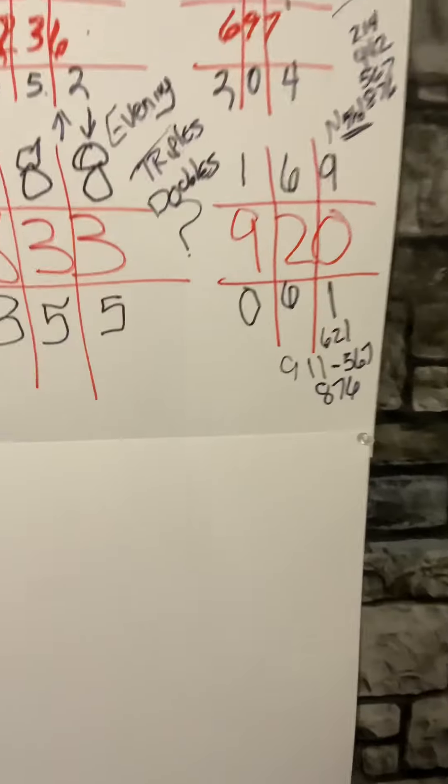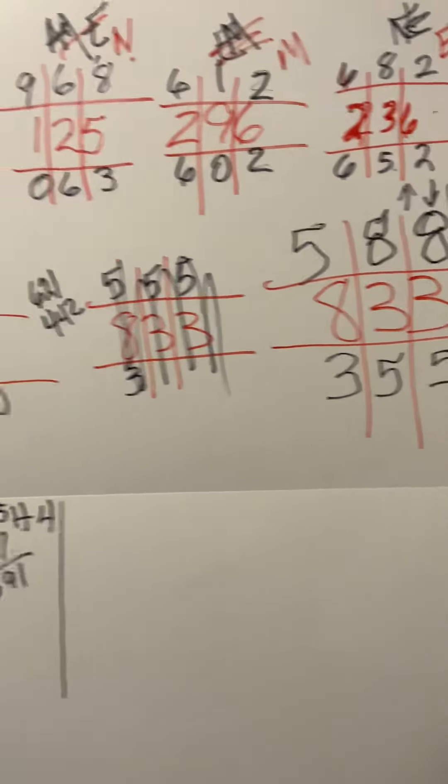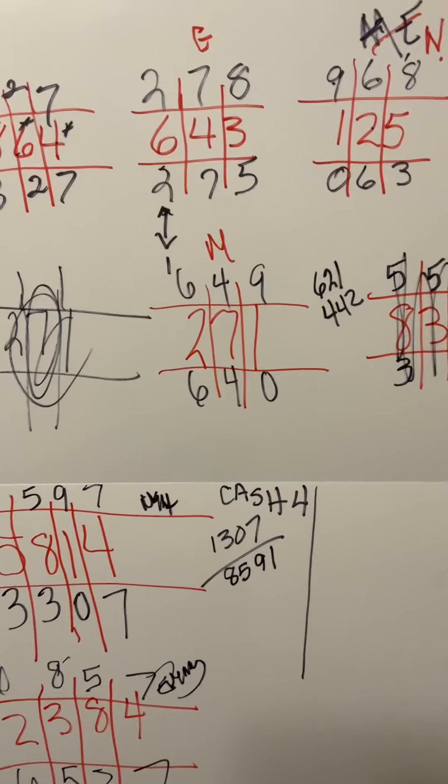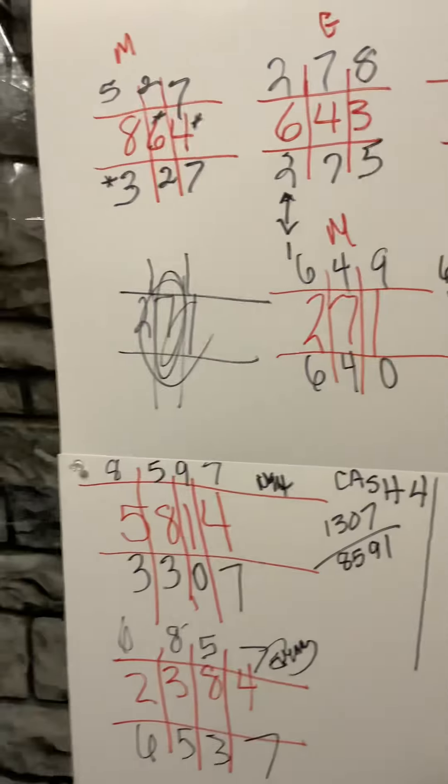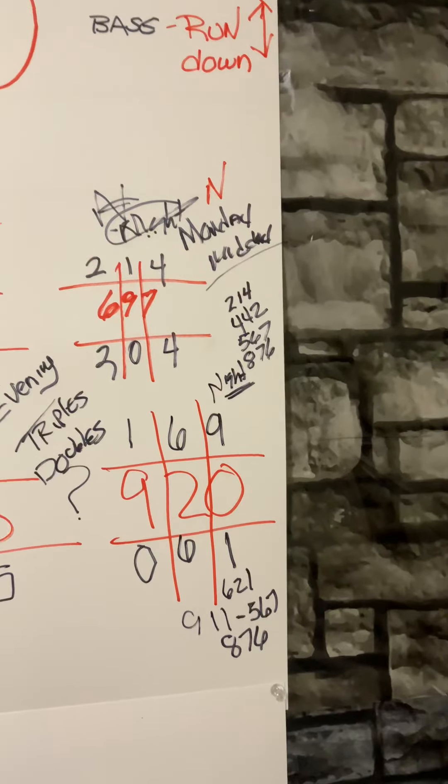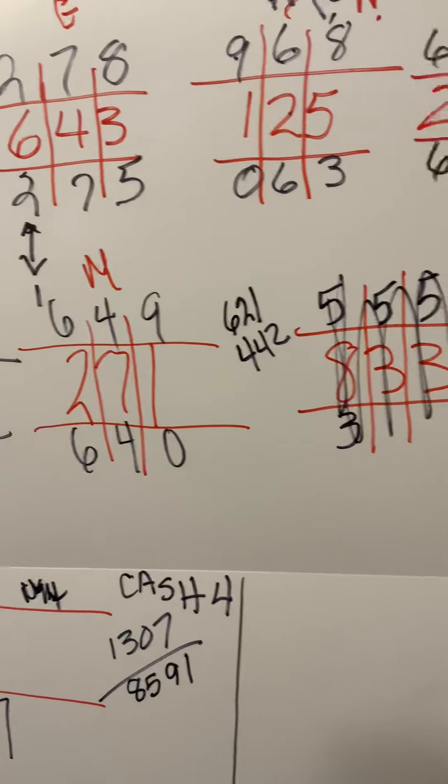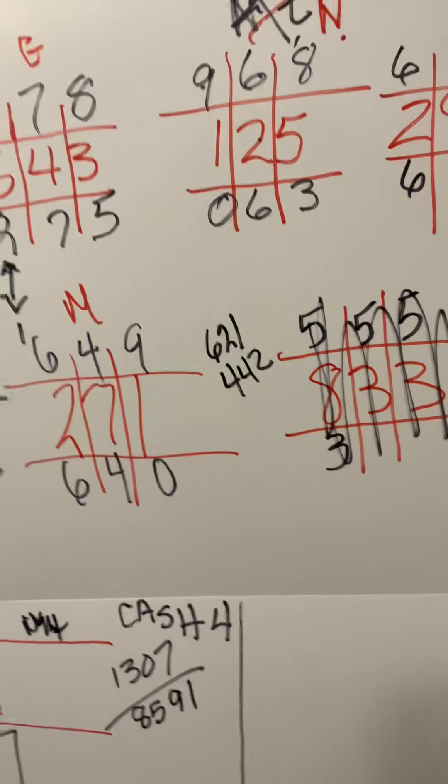But if we go backwards, 920 didn't come from 833, 833 didn't come from 271. 697, 271 did come from that, okay.